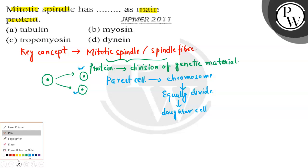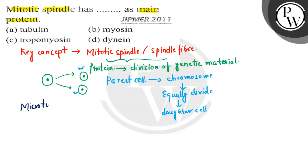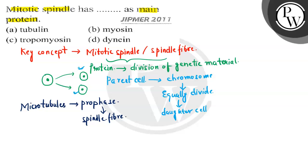The mitotic spindle, or spindle fiber, is basically composed of microtubules. During the first stage of mitosis — that is, the prophase stage — these microtubules lead to the formation of the spindle fiber, which then helps in the separation or division of the genetic material.